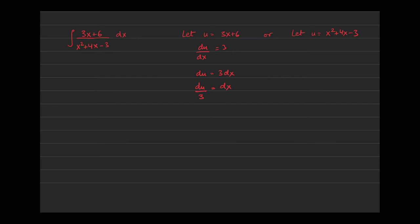So if we were to convert this problem from x-land to u-land, this would get replaced with du over 3. So far, so good. This numerator would get replaced with u. Great. What about the denominator?